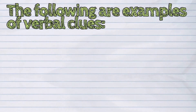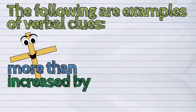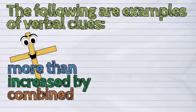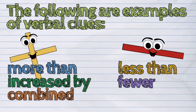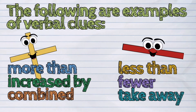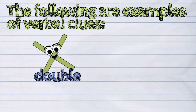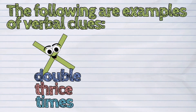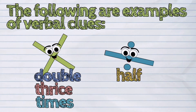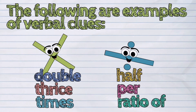The following are examples of verbal clues. For addition: more than, increased by, combined. For subtraction: less than, fewer, take away. For multiplication: double, thrice, times. For division: half, per, ratio, of.